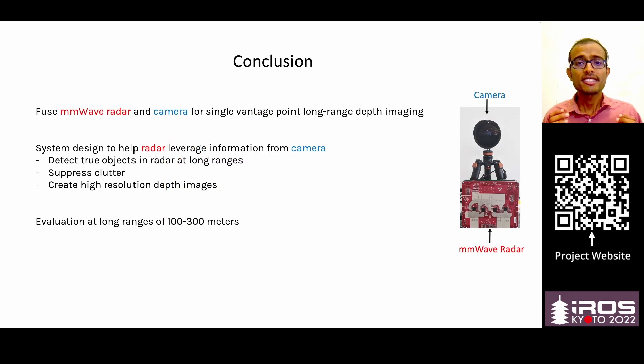In conclusion, we present metamoron. Metamoron is a millimeter wave radar and camera fusion system for single vantage point, high resolution, long range depth imaging. In building this system, we leverage information from camera to help the radar understand where the true objects are amidst all the clutter, to help suppress the clutter, and also create high resolution depth images. We evaluate our system at long ranges of 100 to 300 meters.